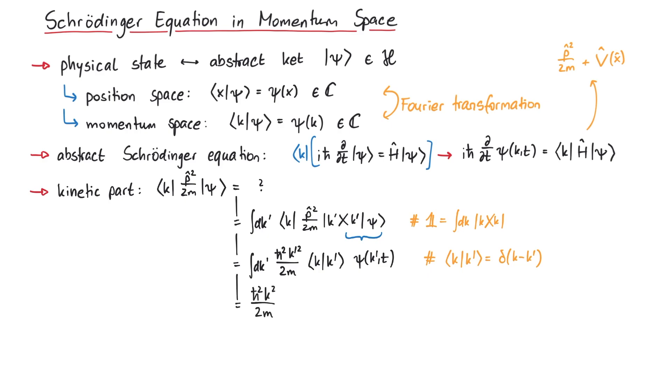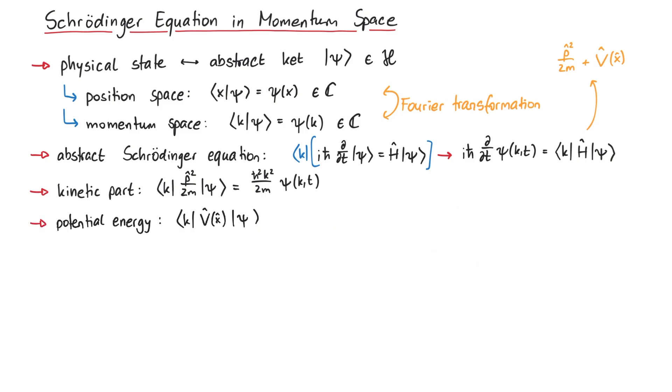The result is h-bar squared k-squared over 2m times the wave function psi tilde of k. The potential energy part is a bit more complicated. We start by inserting a completeness relation in order to get the wave function psi tilde. But then it's not clear how the potential, which involves the position operator, acts on the momentum basis state k-prime.